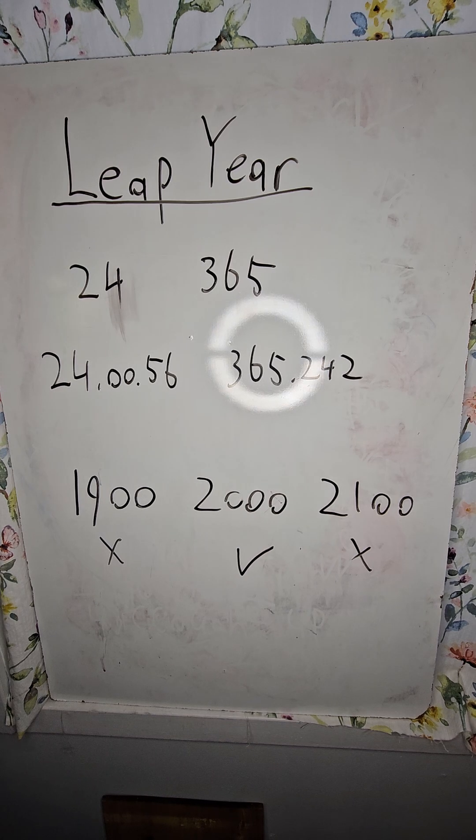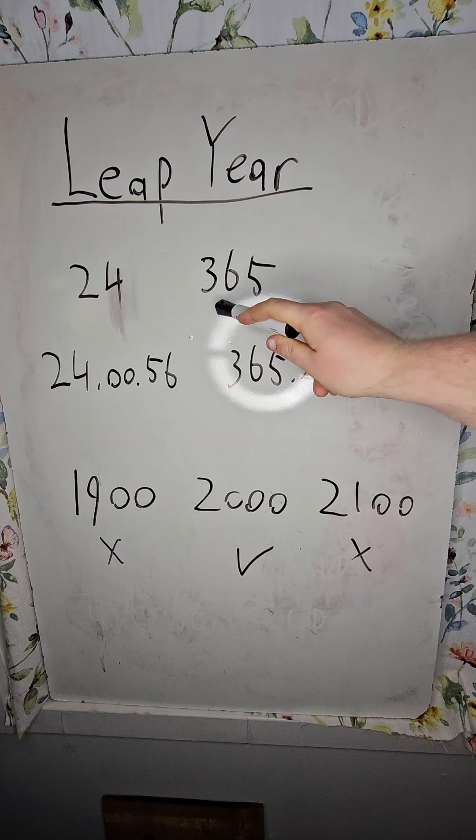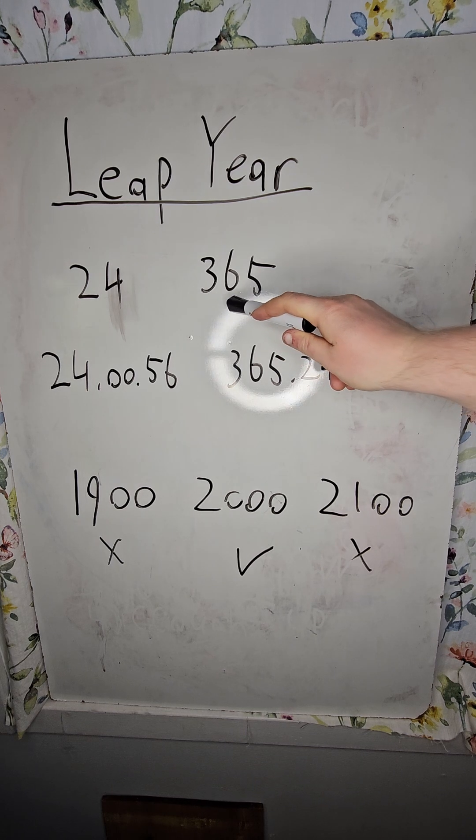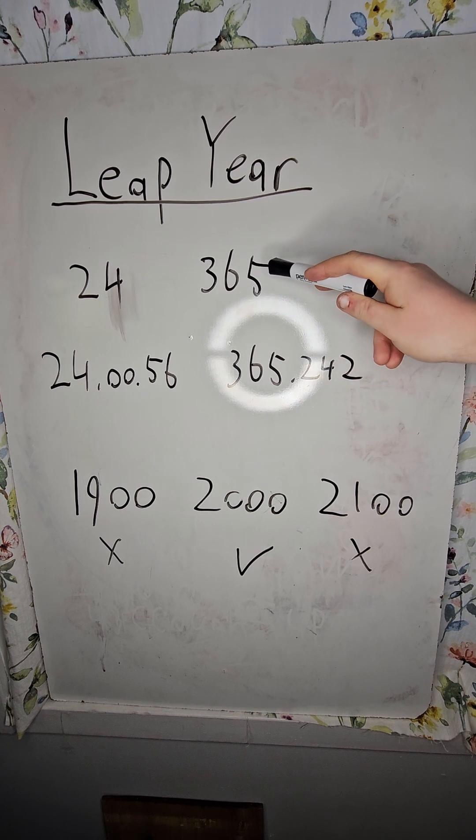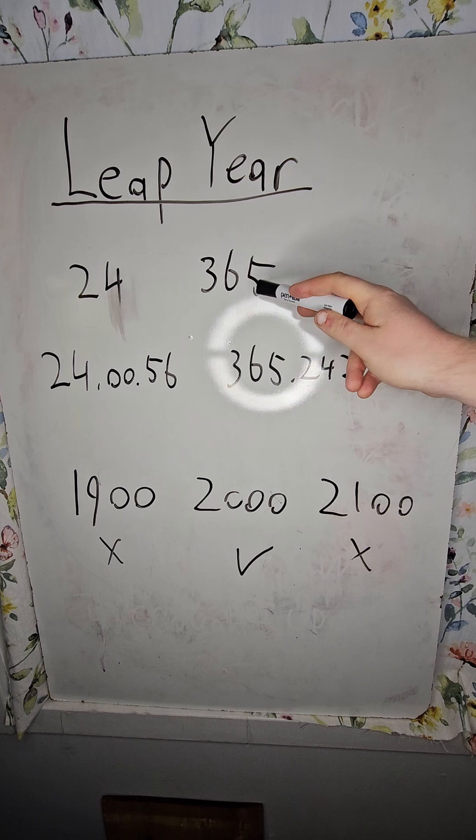How many hours are in a day, and how many days are in a year? If you said 24 hours and 365 days, you'd be right. And you'd also be kind of wrong. Let me explain.